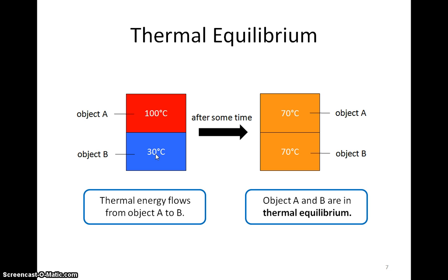Hence, there will be a net flow of thermal energy from object A to object B. As a result, object A will lose thermal energy while object B will gain thermal energy from object A. Hence, the temperature of object A decreases and the temperature of object B increases.